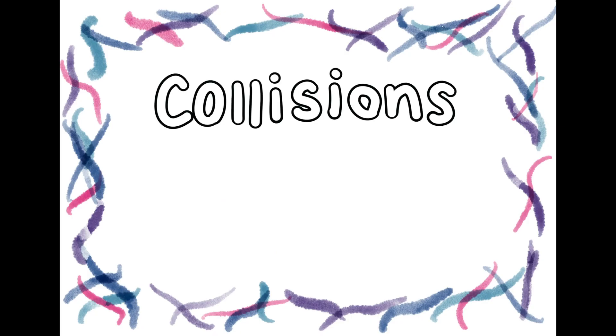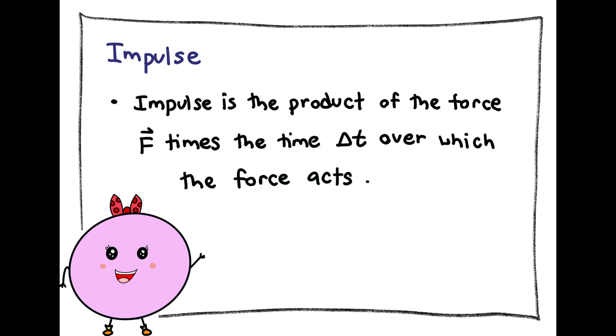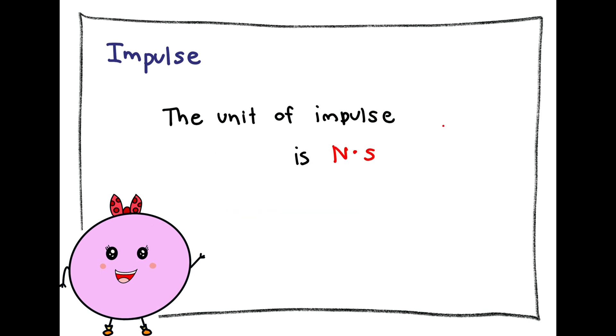During a collision of two ordinary objects, both objects are usually deformed due to the involvement of large forces. Impulse is the product of the force f times the time delta t over which the force acts. In other terms, the formula of impulse is f times delta t. The unit is newton times seconds.